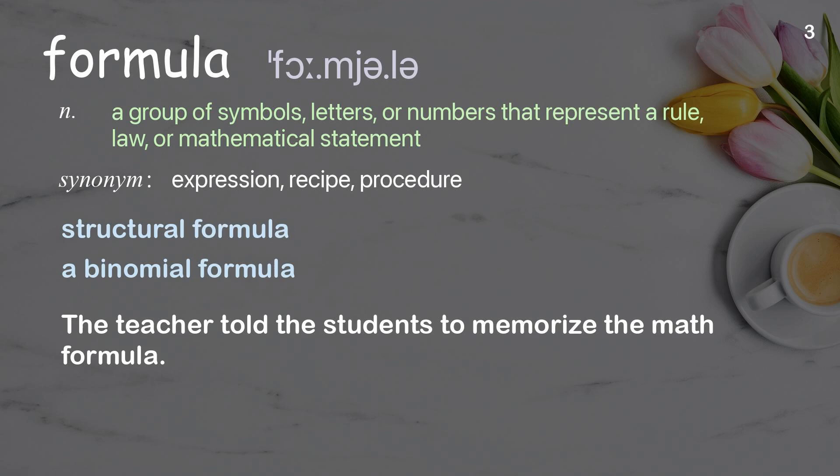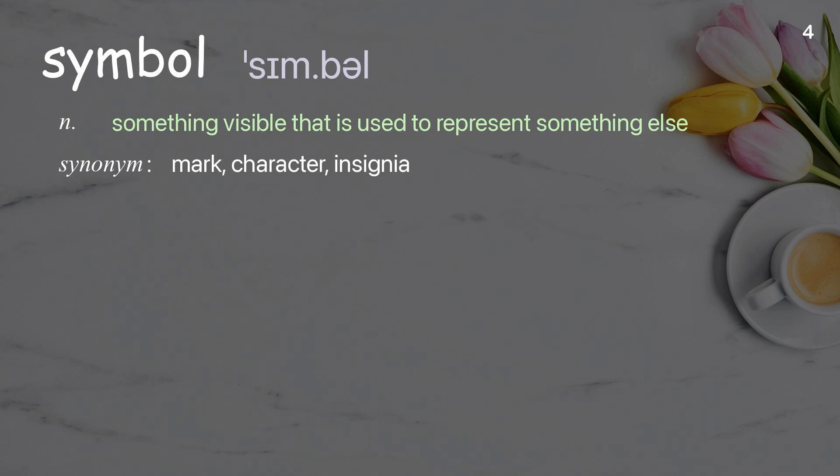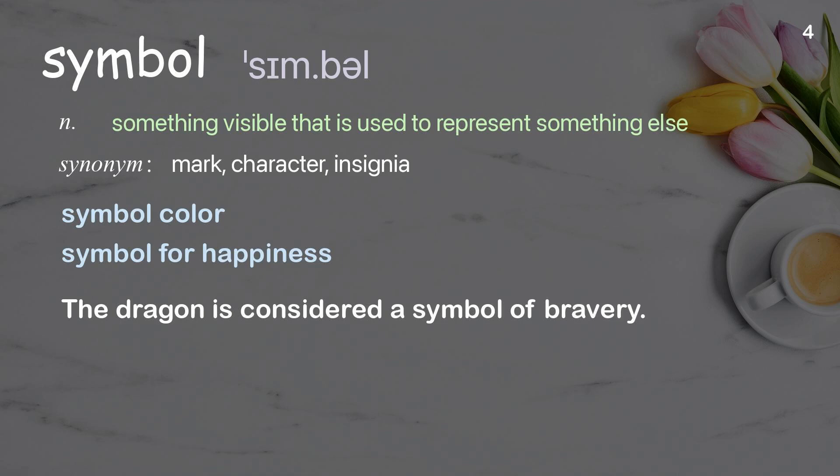Symbol: something visible that is used to represent something else. Examples: symbol color, symbol for happiness. The dragon is considered a symbol of bravery.